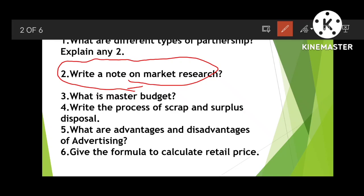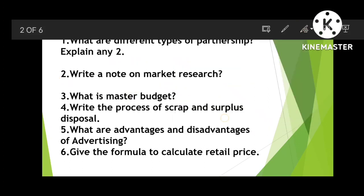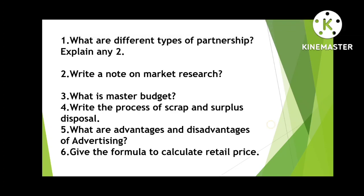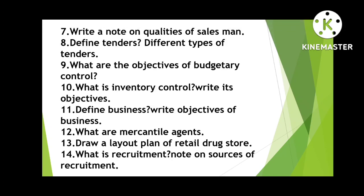Next question: What is the master budget? Then: Write the process of scrap and surplus disposal. What are the advantages and disadvantages of advertising? These are the next questions. Moving to question six: Give the formula to calculate retail price — very important one.